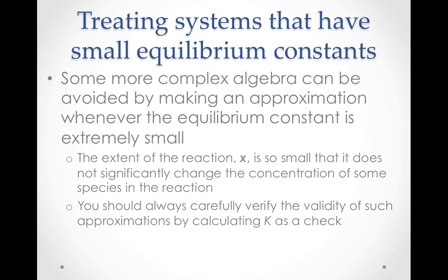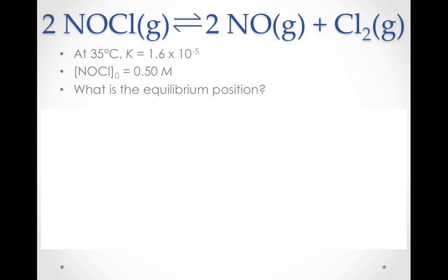Our next equilibrium problem would result in some tricky math by producing a cubic function in order to solve for x. While not impossible, we can avoid the more complex algebra by making an approximation, because this next equilibrium problem has a very small equilibrium constant. Whenever K is small, the extent of the reaction x is typically so small that it does not significantly change the concentration of some species in the reaction. You should always carefully verify the validity of such approximations by calculating K afterward and checking that it matches the K from the problem. This reaction at 35 degrees Celsius has an equilibrium constant of 1.6 × 10⁻⁵. If the reaction starts with 0.50 molar nitrosyl chloride and nothing else, what are the equilibrium concentrations of all three species?